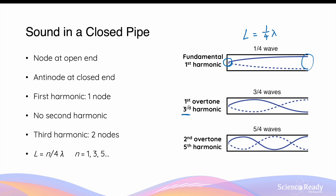In the third harmonic or first overtone, the node again occurs at the closed end and the antinode at the open end. Tracing the wave, the pipe length equals exactly three-quarters of a wavelength: L = (3/4)λ. The third frequency that forms a standing wave in the closed pipe is the fifth harmonic or second overtone, where again the node is at the closed end and the antinode at the open end, giving a pipe length of L = (5/4)λ.